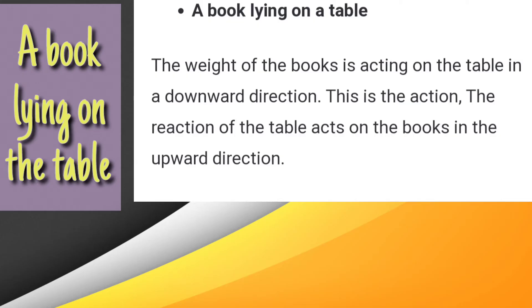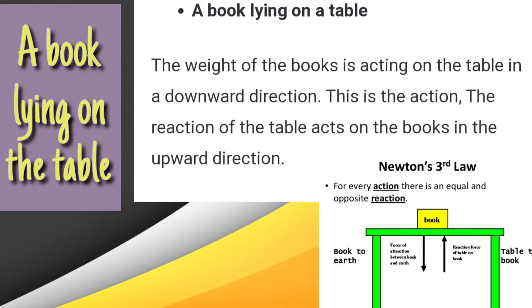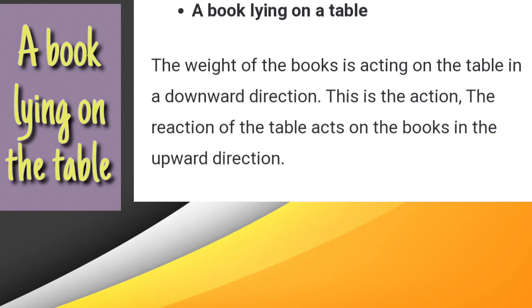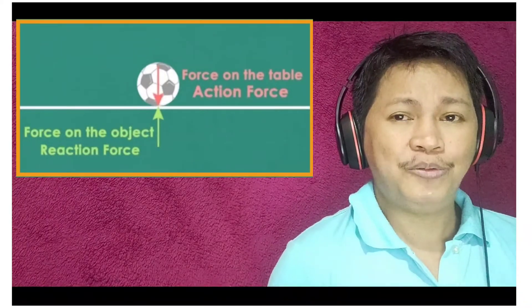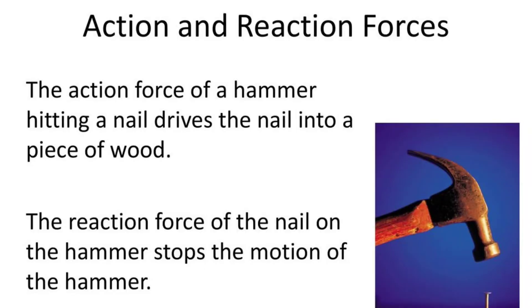To understand Newton's third law better, here are some examples we can relate to in our daily lives. The first example is a book lying on a table. In that picture, the weight of the book acts on the table in the downward direction — this is the action force. The reaction of the table acts on the book in the upward direction — that is the reaction force. So we have two forces interacting: the action force which is downward, and the reaction force which is upward.